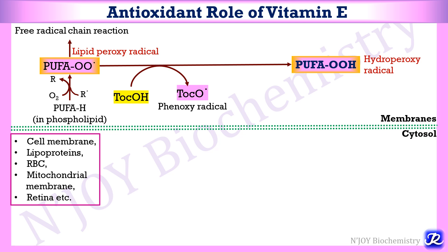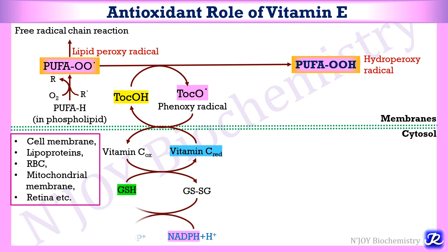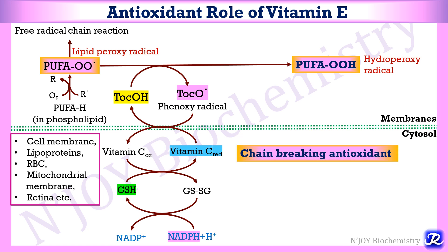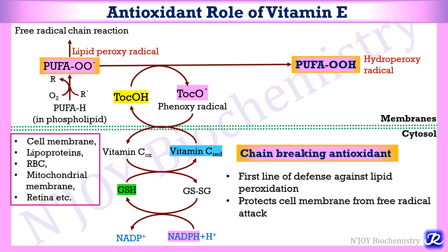The phenoxy radical has two fates. First, it is reduced by vitamin C back to its original tocopherol form; the oxidized vitamin C is then maintained in the reduced form through glutathione and NADPH, which is obtained from the HMP pathway. In the second fate, the phenoxy radical undergoes a series of rearrangements involving oxidation of the chromane ring and side chain, is conjugated with glucuronic acid, and excreted. This is how vitamin E acts as a chain-breaking antioxidant, and it is the first line of defense against lipid peroxidation, protecting cell membranes from free radical attack.